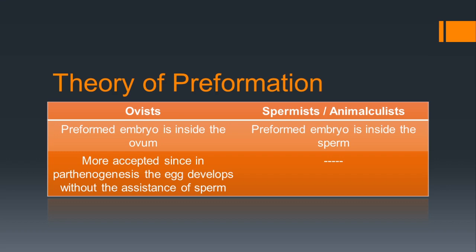There are two schools of thought in the theory of preformation. Some scientists argued that the preformed embryo homunculus is present inside the ovum and they are called ovists. The other group argued that the preformed embryo is present inside the sperm and they were called spermists or animalculists. The argument of ovists was most accepted because in parthenogenesis, the egg develops without the assistance of sperm, so the homunculus must be inside the egg, not the sperm.